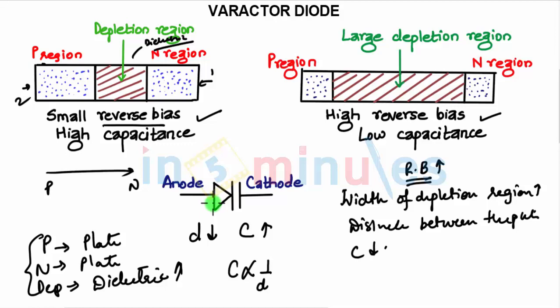The symbol for the varactor or varicap diode — both names refer to the same device. It is used for variable capacitance, not for rectifying or correcting a signal. When operated in a circuit, the varactor diode must remain reverse biased to act as a capacitance. This means the cathode is always positive with respect to the anode. No current flows through the varicap, and as the depletion region thickness varies with applied bias voltage, the capacitance of the diode changes.